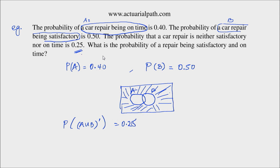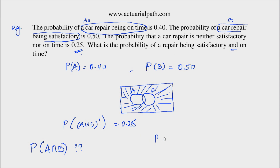The question is to find the probability of a repair being satisfactory and on time — that is, we need to find the probability of A intersection B. We could use the inclusion-exclusion principle: the probability of A union B is equal to the probability of A plus the probability of B minus the probability of A intersection B.